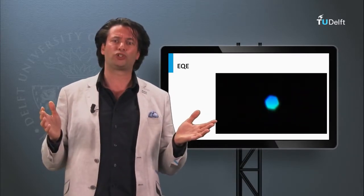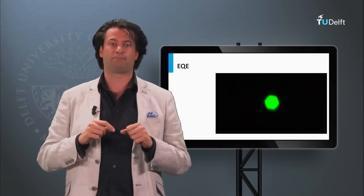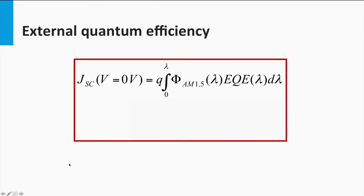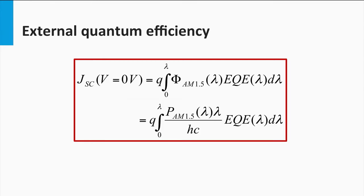How do we determine the short circuit current density from the EQE? Under standard test conditions, the solar spectrum is defined as the AM 1.5 spectrum with a total power density of 1000 W per square meter. The total current generated at a wavelength lambda is the elementary charge multiplied by the product of the photon flux phi at AM 1.5 and the EQE. The total short circuit current density can be determined by integrating over the entire wavelength range. The spectral photon flux equals the spectral power density divided by the photon energy.